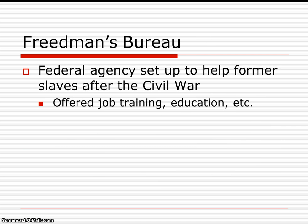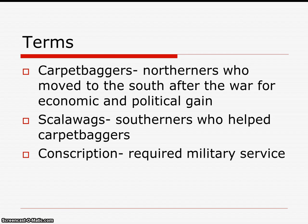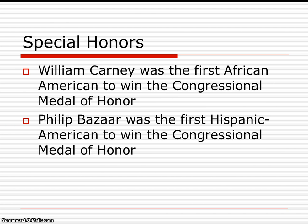The Freedmen's Bureau is the federal agency set up to help former slaves after the Civil War, offering job training, education, and help assimilating into American society. A few terms to remember: Carpetbaggers are Northerners who moved to the South after the war for economic and political gain. Scalawags are Southerners who helped the carpetbaggers. Conscription is required military service. Notable individuals include William Carney, the first African American to win the Congressional Medal of Honor, and Philip Bazar, the first Hispanic American to win the Congressional Medal of Honor. That wraps up your timeline sheet — make sure you have it ready for next class.